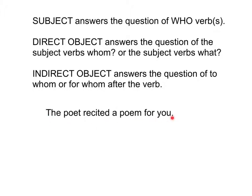The poet recited a poem for you. Can you find the subject of the sentence? Who recited? The poet recited — so there's your subject. Let's look at the word poem. The subject verbs what? The poet recited what? The poet recited a poem — that is your direct object. And then we have for you, which answers the question of to whom or for whom. The poet recited a poem for whom? For you — that is your indirect object.